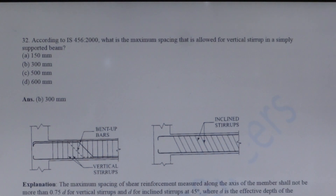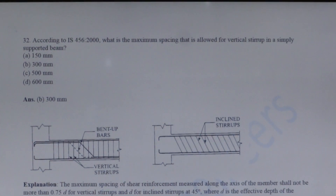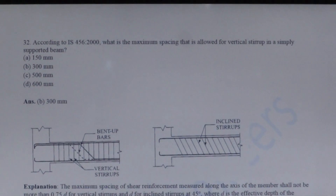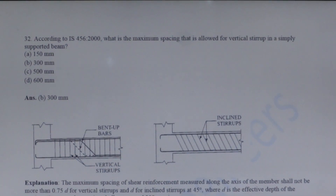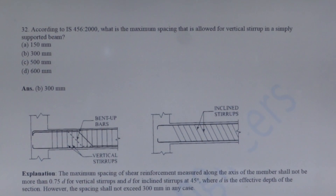Next question: According to IS 456-2000, what is the maximum spacing allowed for vertical stirrups in a simply supported beam? As per IS 456-2000, the maximum spacing of shear reinforcement when vertical stirrups are provided should not be more than 0.75d or 300 mm, whichever is less. So the correct answer is 300 mm.